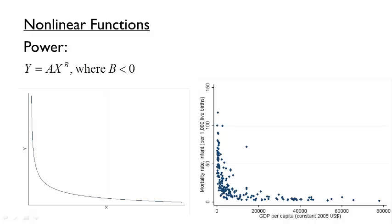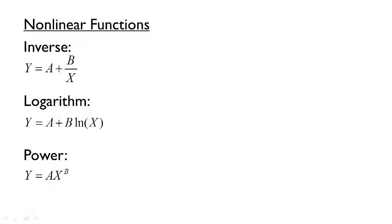For each of these functions, how would we choose values of the constants a and b so that the function best fits the data? Ordinary least squares regression can estimate the slope and intercept of a line, but what about nonlinear models? Recall that OLS requires that models are linear in parameters. Let's see if we can make each of these models linear in the parameters and then estimate the relationships using a regression.